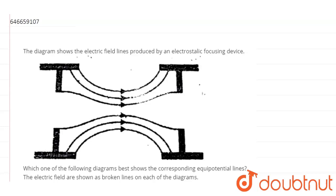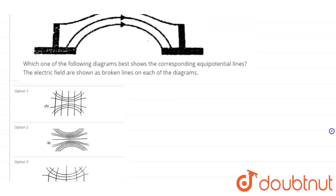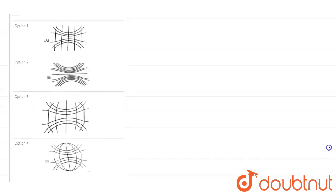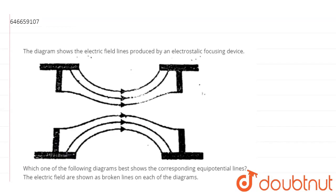The electric field are shown as broken lines on each of the diagrams. So the diagram that they have given us in the question represents electric field lines, and then we have four different diagrams representing the equipotential lines corresponding to these electric field lines.